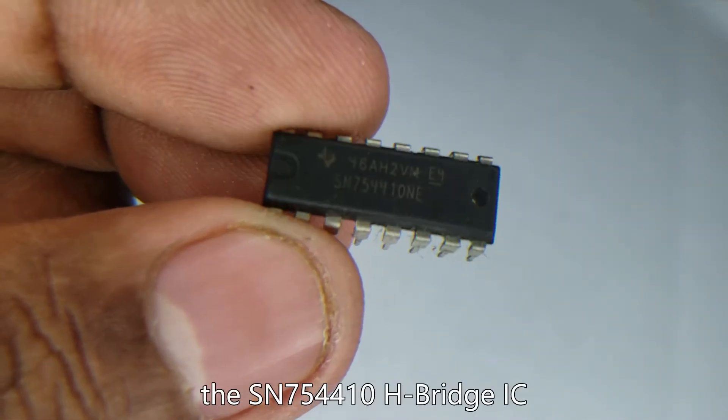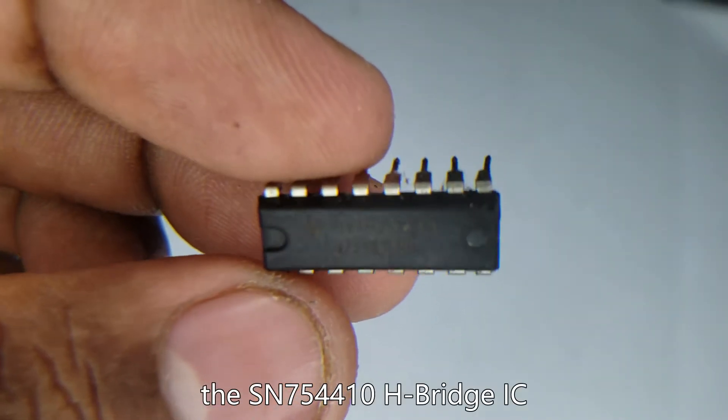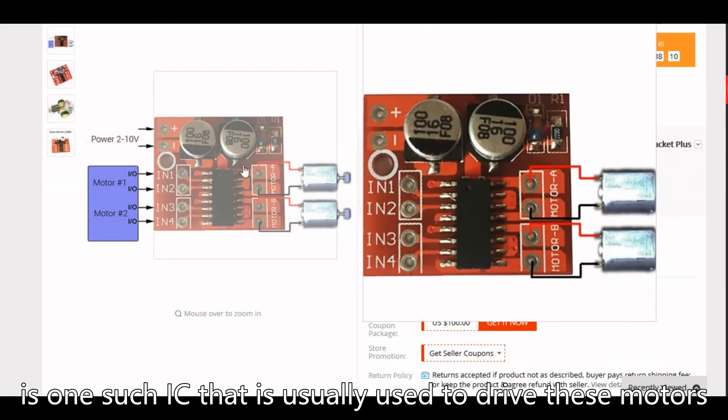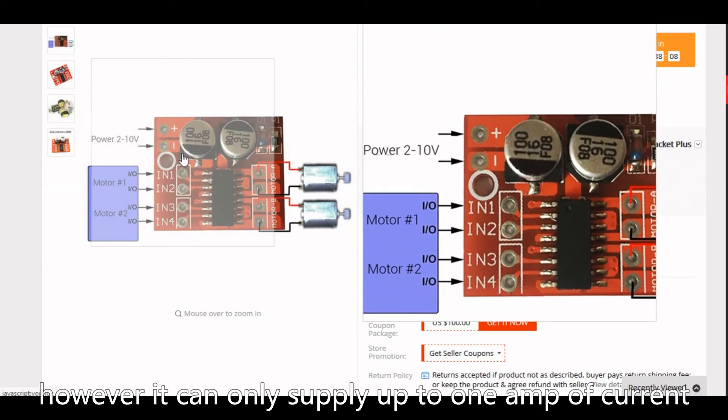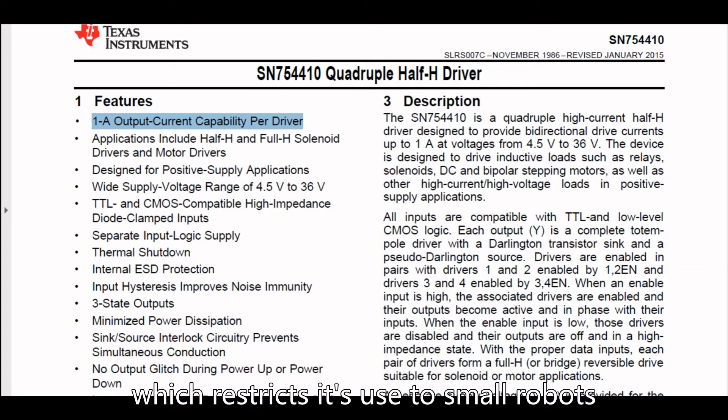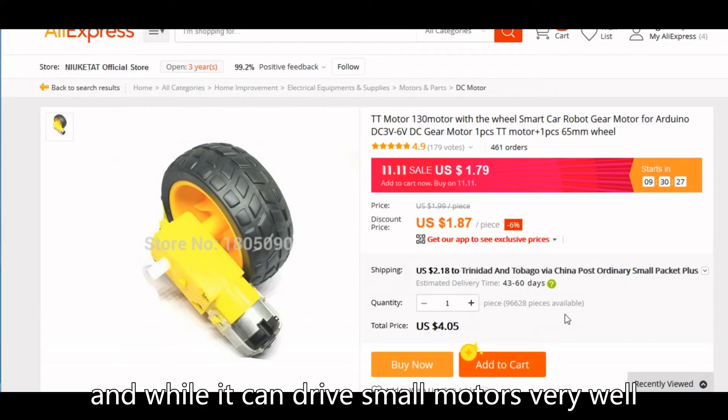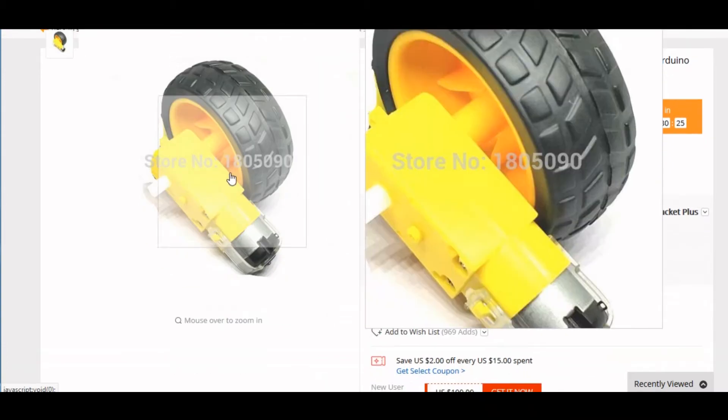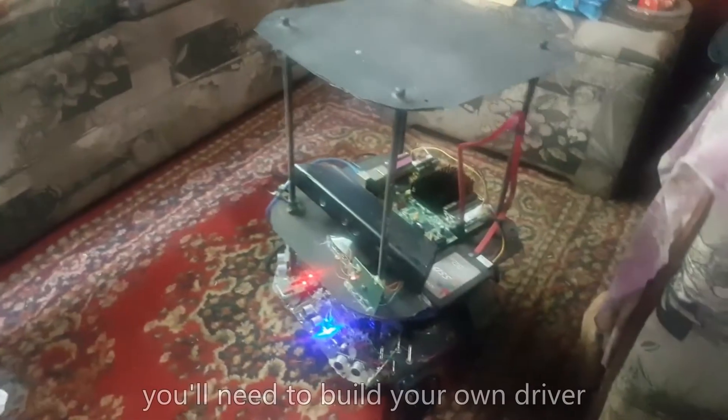The SN754410 H-bridge IC is one common IC that is usually used to drive these motors. However, it can only supply up to 1 amp of current which restricts its use to small robots. And while it can drive small motors very well, if you want to drive larger robots, you will need to build your own driver.